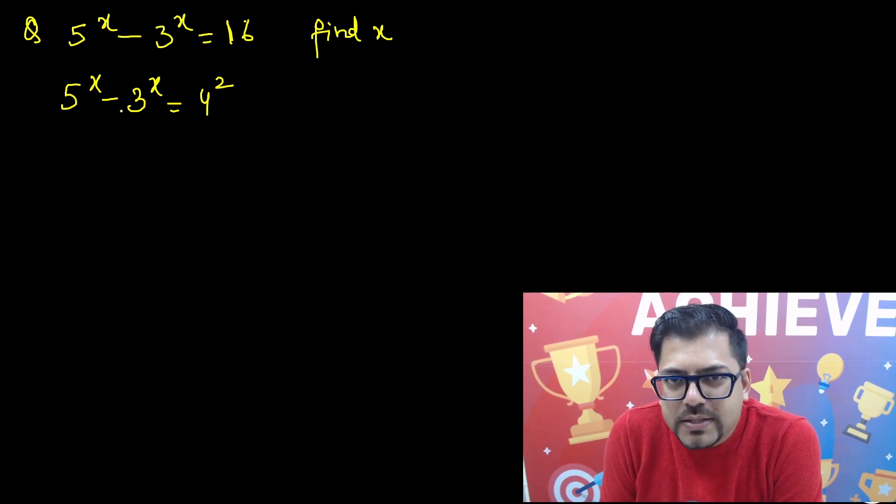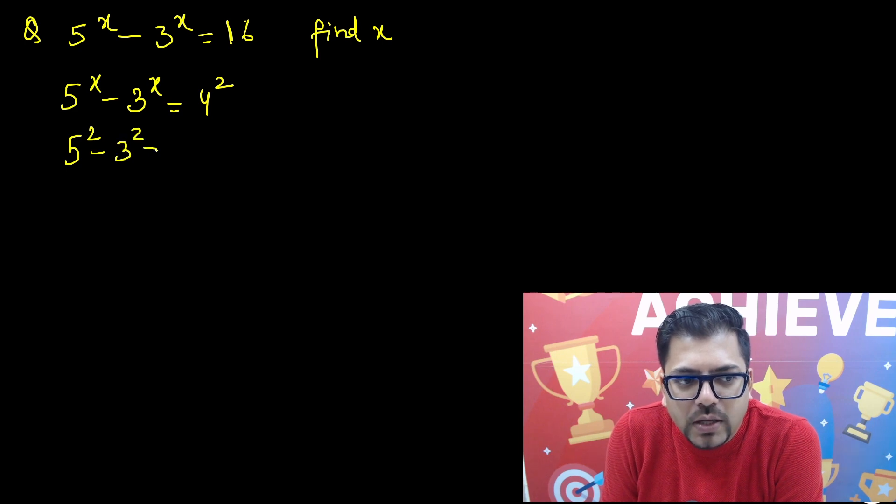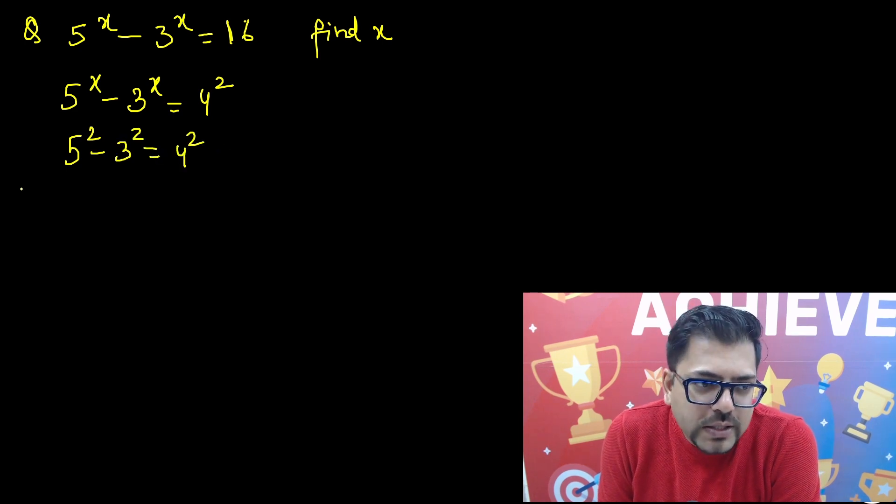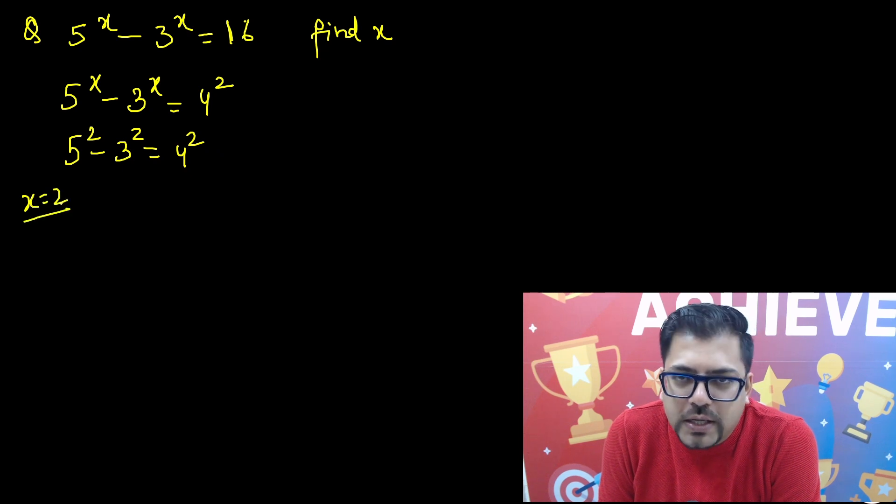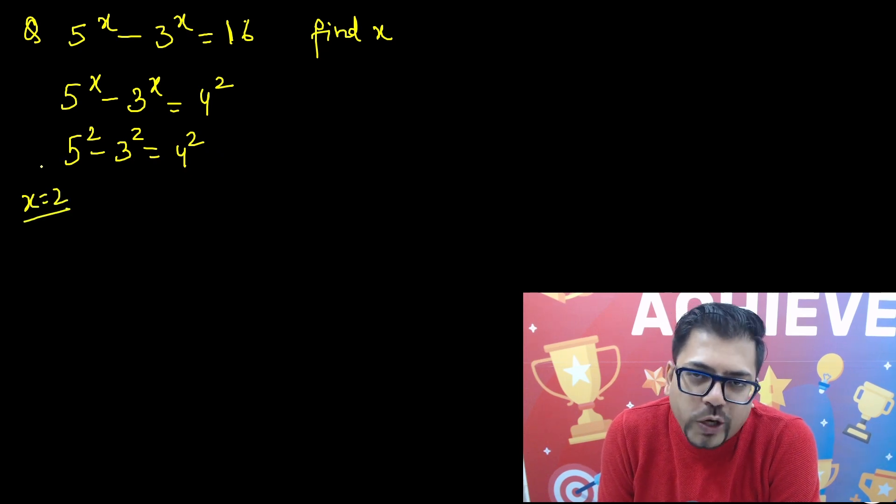If you see this, this is very simple. It is a Pythagorean theorem. 5 squared minus 3 squared equals 4 squared. So if it was so easy and x equals 2, hit and try answer. Then why this video? Not required at all.